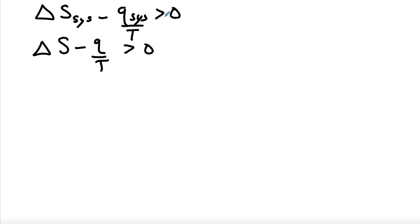Typically if we're dealing with system variables rather than surrounding variables, we just omit the subscripts. So if you don't see subscripts on a variable, that means you're talking about the system and not the surroundings.